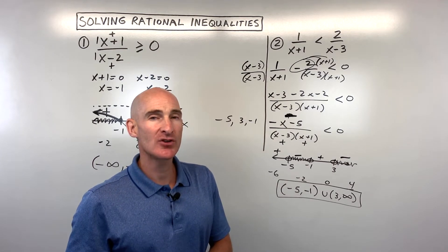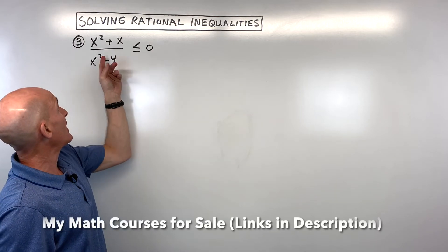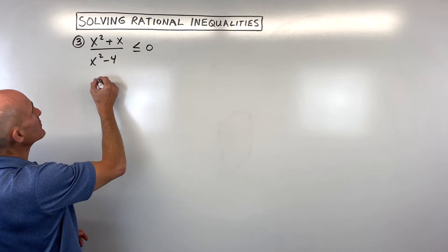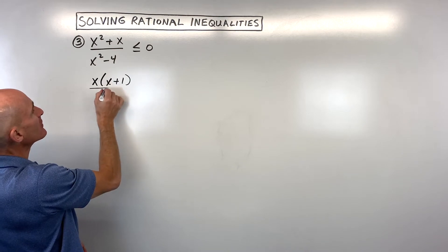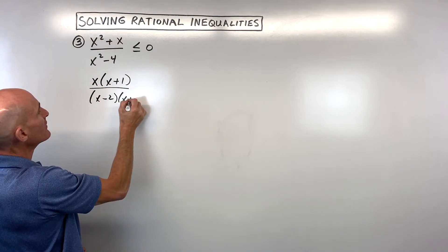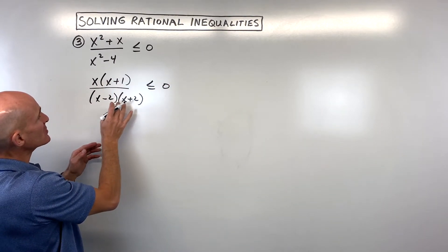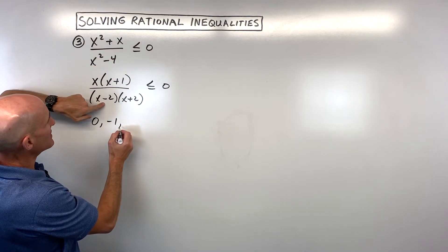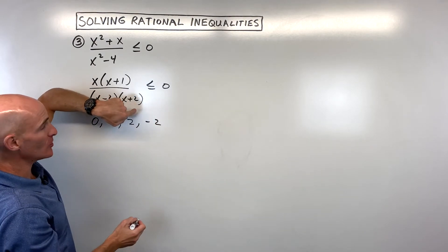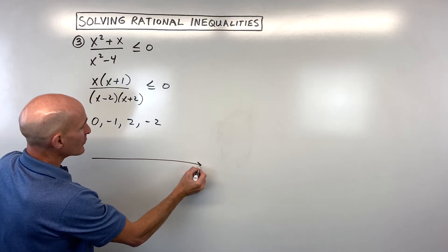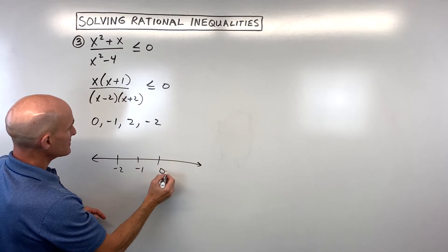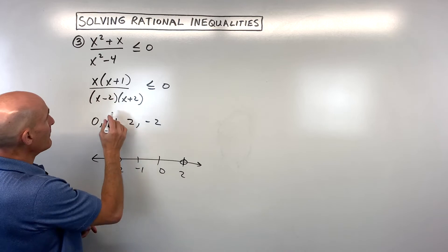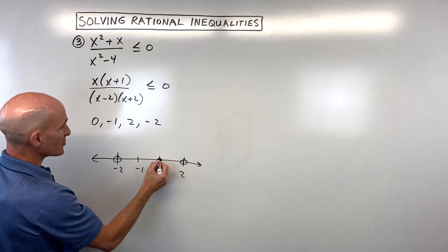Let's take a look at one more example — see if you can pause and try it on your own. We've got x squared plus x all over x squared minus four, less than or equal to zero. I'd factor the numerator by taking out the greatest common factor, and the denominator is a difference of two squares. Setting each factor to zero: x equals zero, x plus one equals zero gives negative one, x minus two equals zero gives two, and x plus two equals zero gives negative two. On the number line we plot negative two, negative one, zero, and two. The denominator cannot be zero, so at two and negative two these are open circles. The numerator can equal zero, so at zero and negative one these are closed circles.